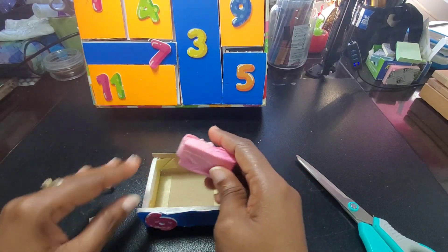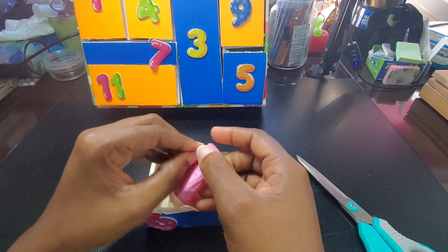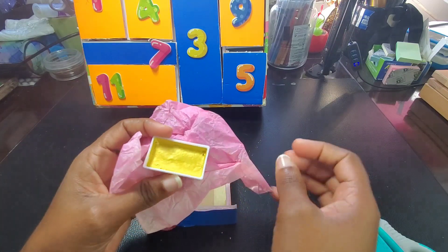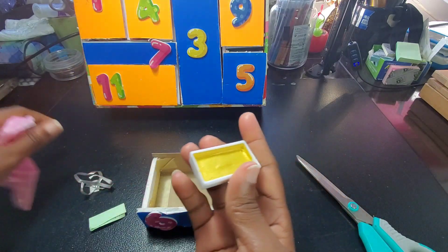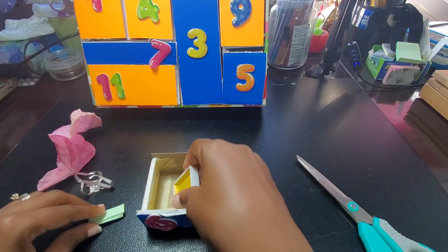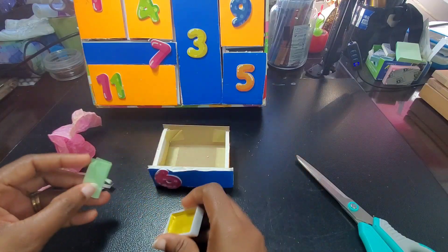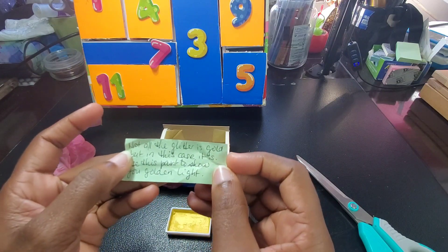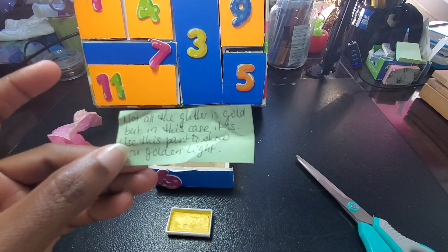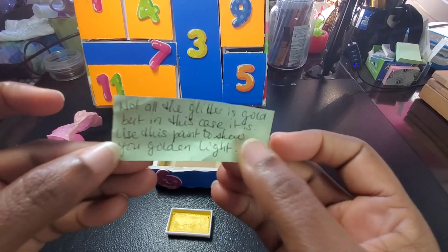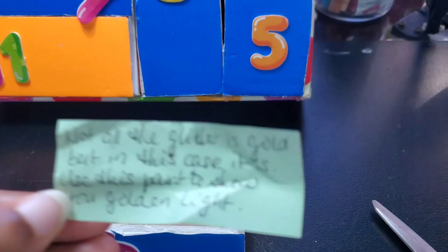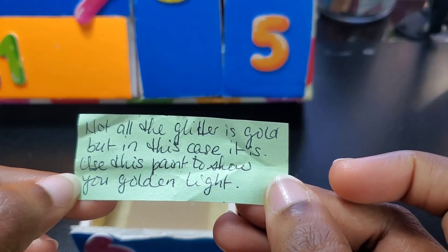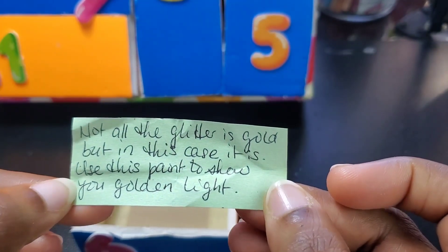Okay, I'll read the note later. Uh-oh, it's a gold paint. Okay, I recognize this. This is a gold paint and it's in Day 6. Let's read, guys. Sorry, here we are, let's get in a bit closer. Not all the glitter is gold, but in this case it is. Use this paint to show your golden light.